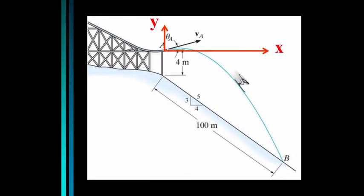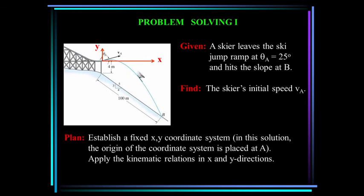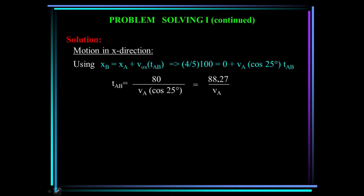Here's a problem to solve: a skier leaves his ski jump at an angle of theta sub a, 4 meters above a reference point, going down a 3-on-4 slope, and lands 100 meters down the slope. The question is: what is his initial velocity? We apply the rectilinear equations of motion in the x and y directions. For x: the position at b is four-fifths times 100, the initial x is 0, and the initial velocity times cosine 25 times the travel time from a to b. Simplifying gives us the time from a to b.